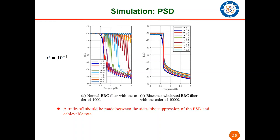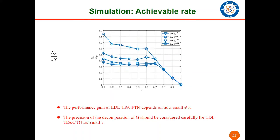Since the average information rate and outage capacity depends on the value of N_active over N, it can reflect the performance gain of pre-coded FTN over Nyquist signaling. As we can see, the performance gain of LDL-TPA-FTN depends on how small theta is. However, when an extremely small threshold is adopted, the allocated power may be inaccurate due to the limit of the precision of the decomposition. Therefore, the precision of the decomposition of G should be considered carefully for LDL-TPA-FTN for small tau.